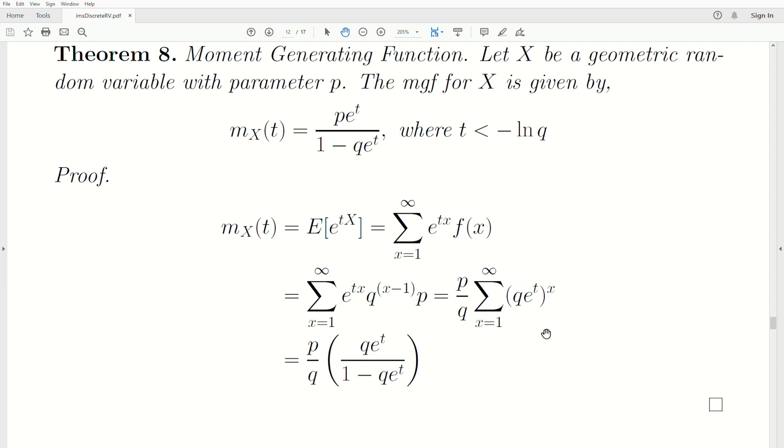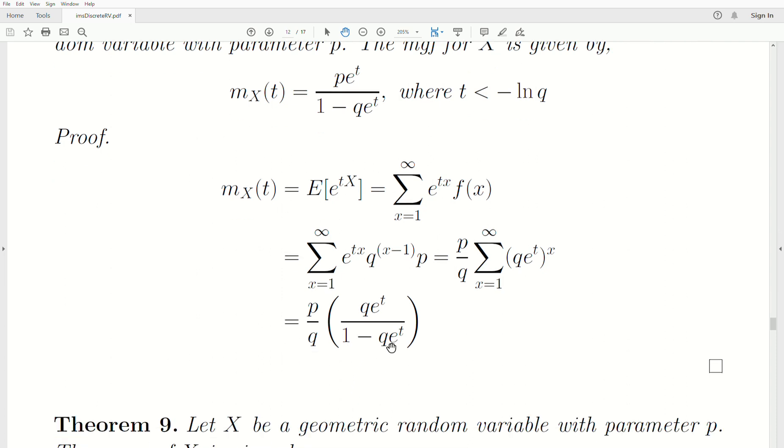And this is a geometric series from one to infinity. And if Q E to the T is less than one, which is actually what this requirement up here is, then there's a formula for it. And this is it. And so this is the moment generating function.